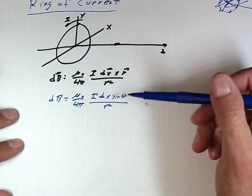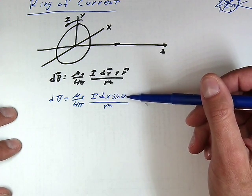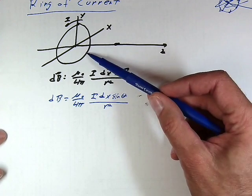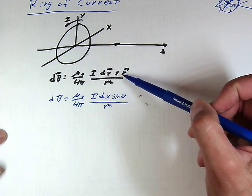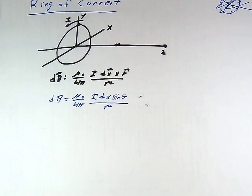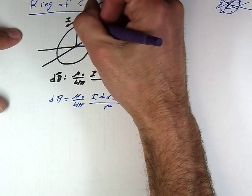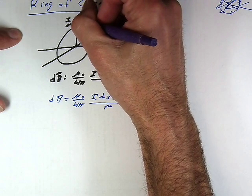And you'll keep in mind that this angle theta is always the angle between dx, which is a little bitty segment of the ring as we'll find out, and the observation point. So let's maybe draw those things in there. So we're going to choose an observation point, excuse me, a little segment of the circle.